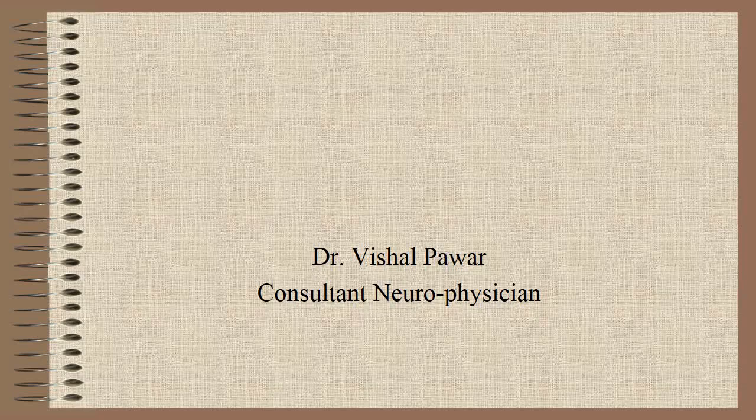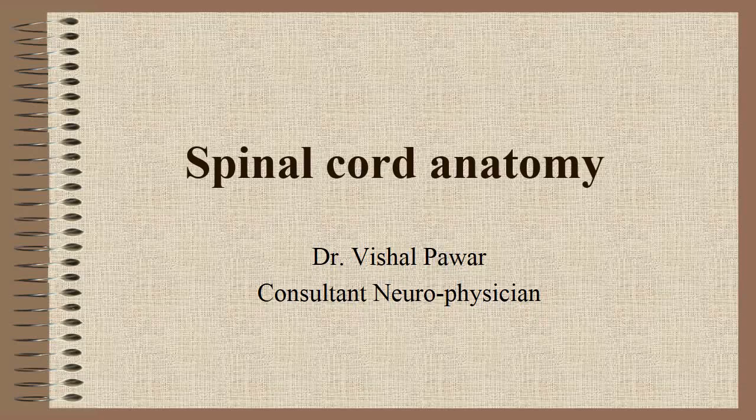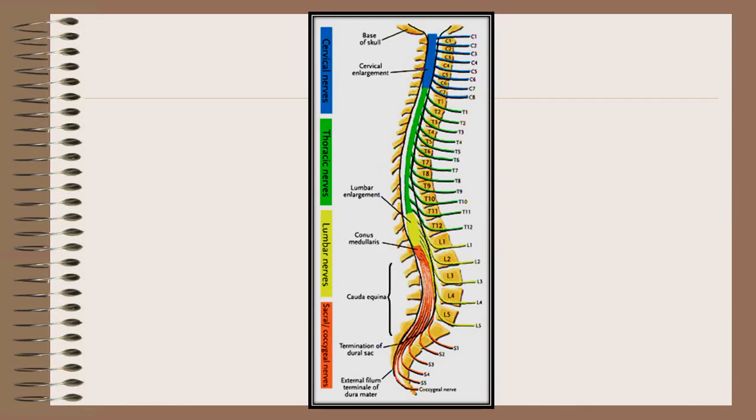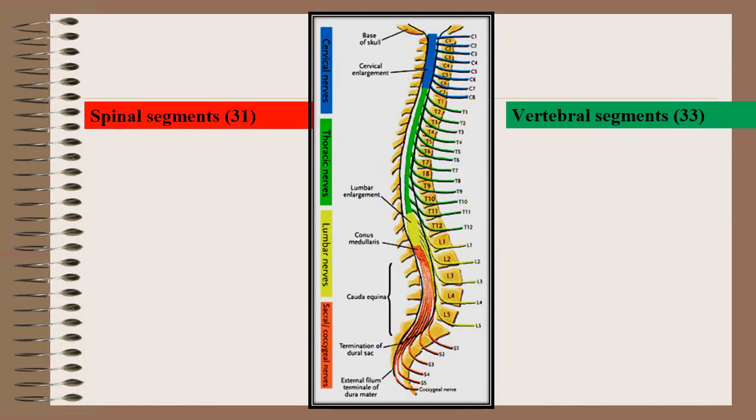In this video, I am going to discuss spinal cord anatomy. There are two types of segments as far as the spinal cord is concerned. There are 31 spinal segments and there are 33 vertebral segments or vertebrae.